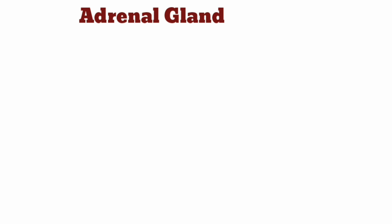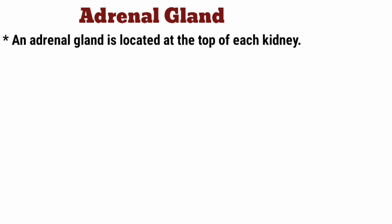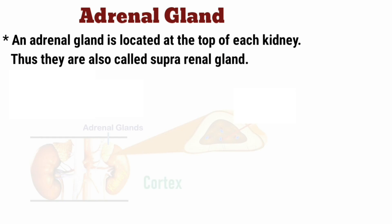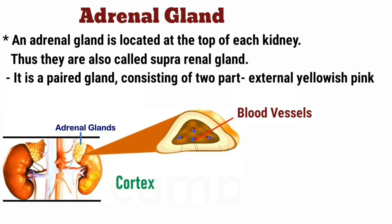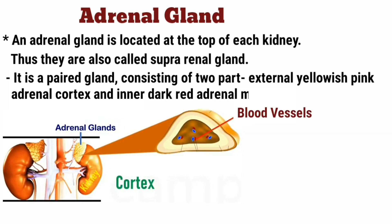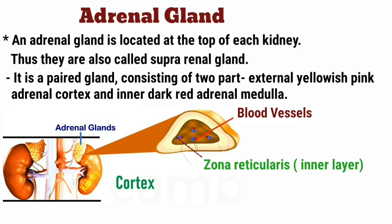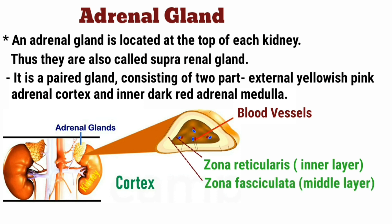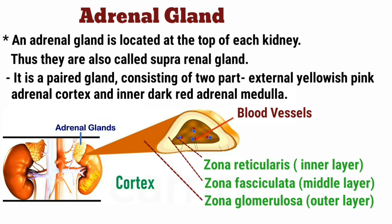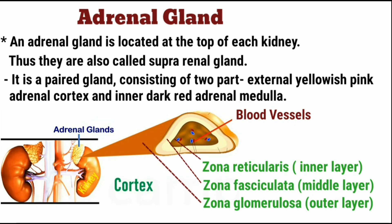The adrenal gland is found above the kidney, and therefore it is also called the suprarenal gland. It is a paired gland having two parts: the outer adrenal cortex and the inner adrenal medulla. The cortex is divided into three layers: zona reticularis (inner), zona fasciculata (middle), and zona glomerulosa (outer). It sits above the kidney forming a cap-like structure, and it secretes adrenaline and steroid hormones like aldosterone and cortisol.